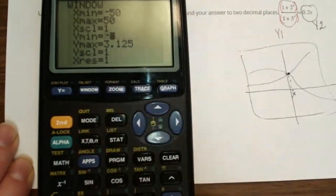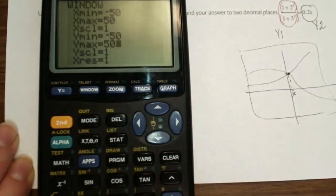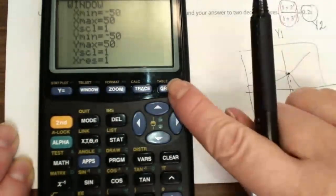Y minimum, again, I will choose negative 50 and I will go up to positive 50 and I will count by 1. Press Graph.